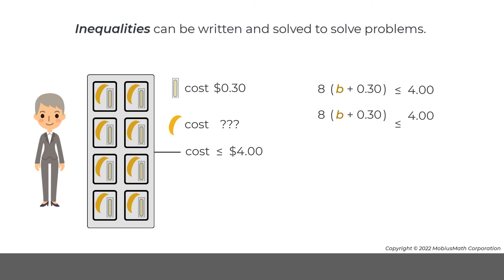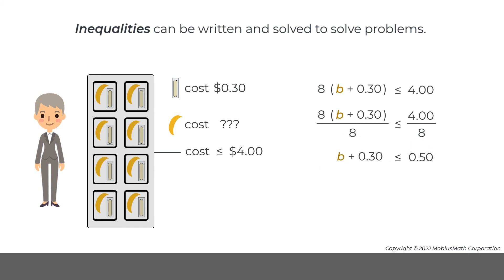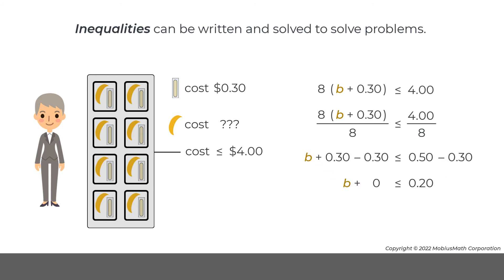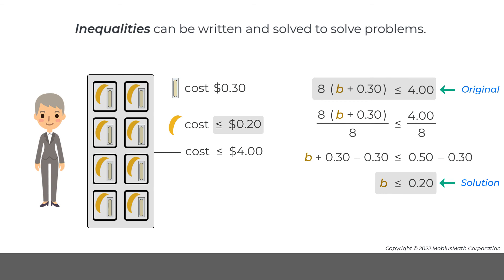This inequality can be solved by dividing both sides of the inequality by 8. Finally, 0.30 can be subtracted from both sides of the inequality. So, the solution to this inequality is b less than or equal to 0.20. For the snack pack problem, the cost of a banana must be less than or equal to 20 cents to keep the cost of 8 snack packs less than or equal to $4.